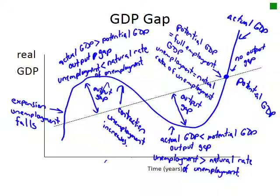Where actual GDP and potential GDP intersect, we would have no output gap. At this point, potential GDP equals the full employment GDP — in other words, unemployment equals the natural rate of unemployment.